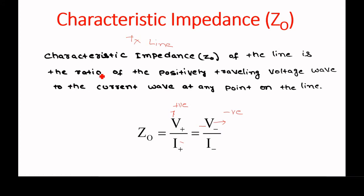The first terms correspond to the wave travelling in positive Z direction or forward wave. V minus and I minus are the terms related to the reflected wave or the backward wave. This characteristic impedance is independent of the distance, so it will be the same everywhere on the line — not dependent on the location where you are measuring on the transmission line.